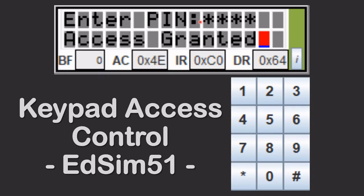Hello and welcome. In this video I'm going to show you how to implement a keypad access control system using the EdSim 51. On the LCD, the message 'Enter PIN' will be displayed. You then go to the keypad and type in a four-digit code. The key that you press will not be displayed, but four asterisks will appear — one for each key entered. If you get the correct code, 'Access Granted' will be displayed; if the code is wrong, 'Access Denied' will be displayed.